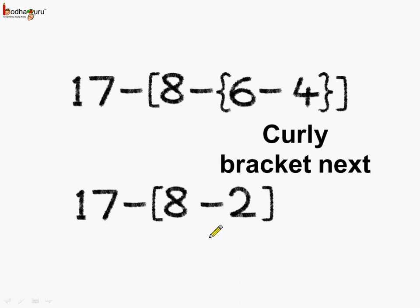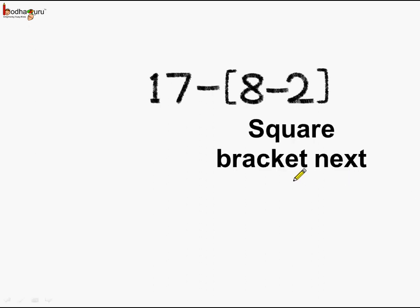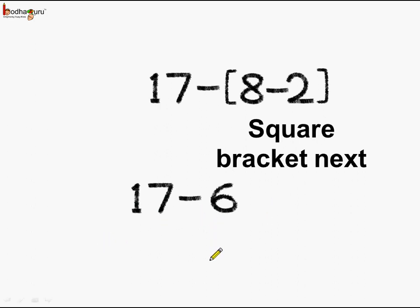Next, we solve the square bracket: 8 minus 2, which is equal to 6. So we get 17 minus 6, and 17 minus 6 is equal to 11. This is how we solved an expression which involved multiple bracket types and operations.